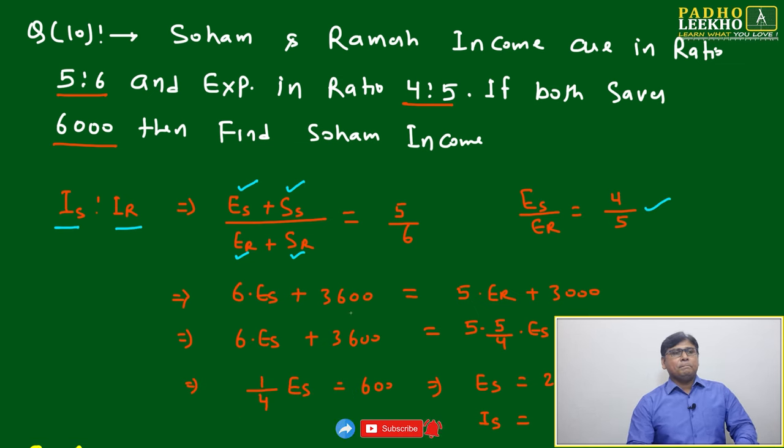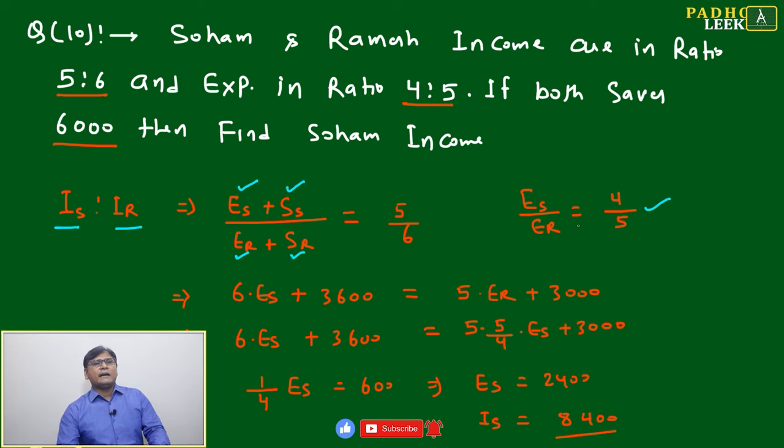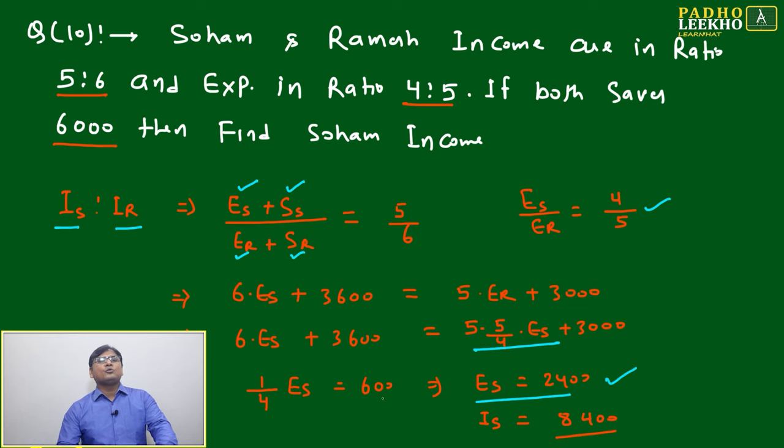Just cross multiply then, and put Er equal to 5/4 into Es. Then you will get the value of Es equal to 2400.